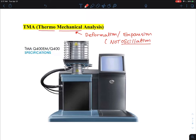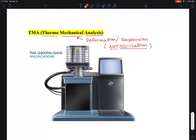It is not oscillation because oscillation is used in DMA. Like I said, TMA is really good for us to quantitatively measure the CTE value, which is coefficient of thermal expansion.